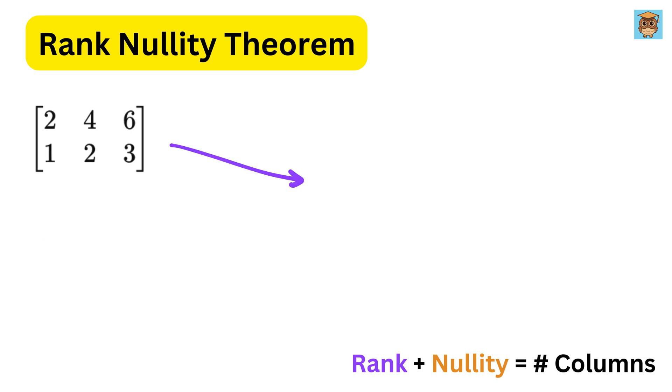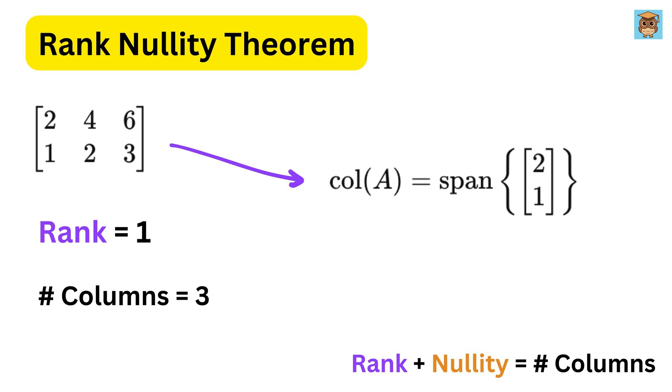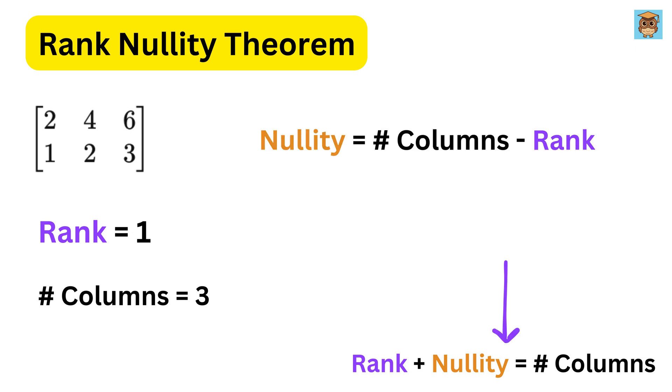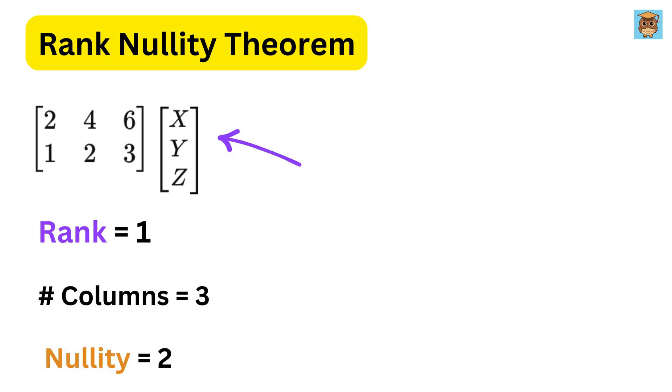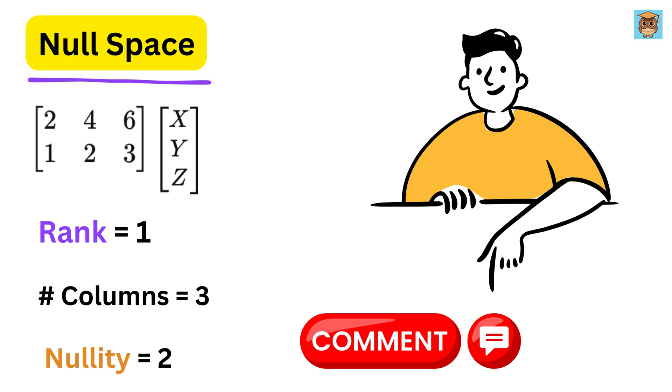So, for this case, we have the column space of this matrix as this, because the other two columns are just the multiple of this one, or they are linearly dependent upon this first column, and thus its rank is 1. Also, the number of columns in this matrix is 3. So, even without calculating the null space of this matrix, we can say that the nullity of this matrix will be 3, minus 1, or 2. By the way, using x, y, and z as the input vectors, can you find the null space of this matrix? And let me know your answer in the comments below.